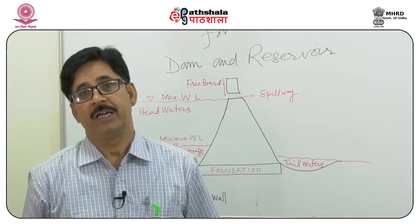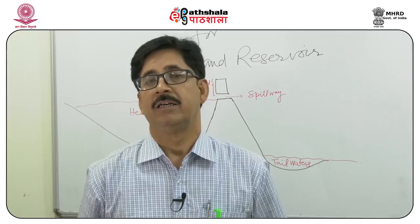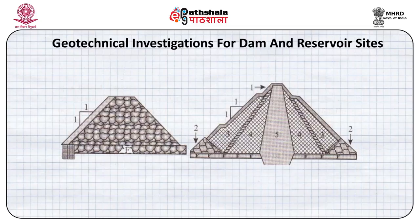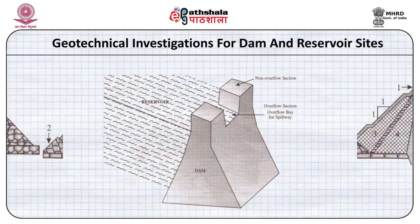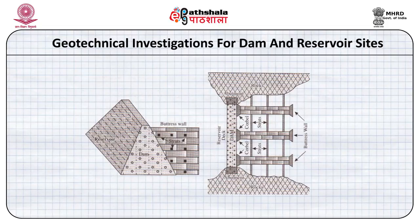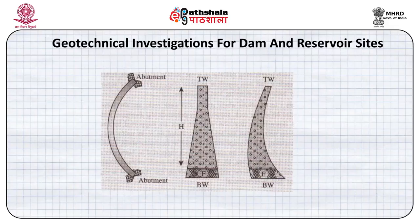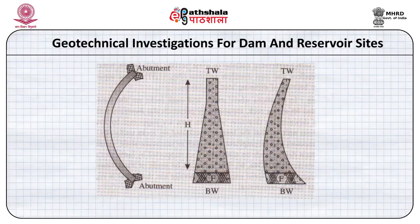The type of dam selected depends on the foundation rocks. Very weak rocks call for an earth dam; earthquake-prone or permafrost regions call for a rock fill dam; very strong foundation rocks support gravity dams. Buttress dams are used where alternating strong and weak rocks exist — the main dam sits on strong rocks supported by cross walls called buttresses. Arch dams are built where water thrust is high; the upstream curve deflects thrust toward the abutments, requiring strong foundation and abutment rocks.